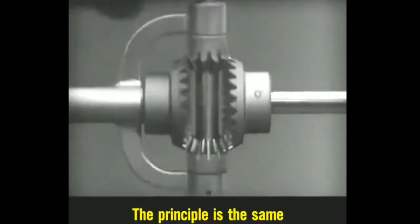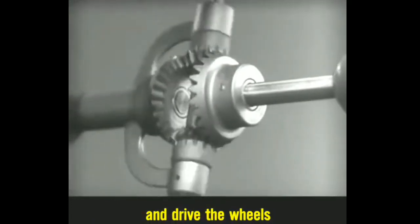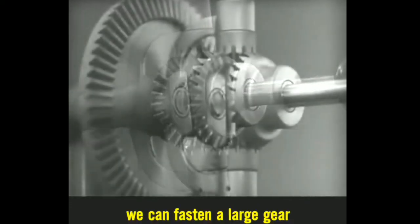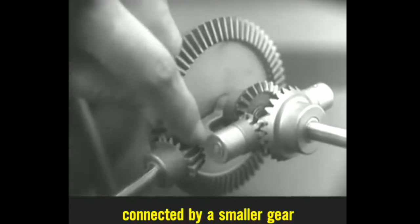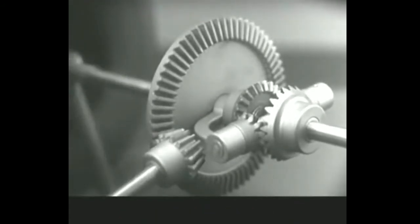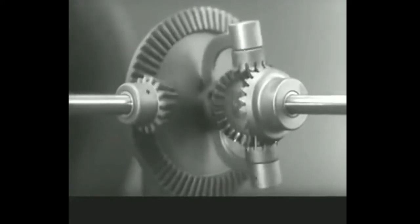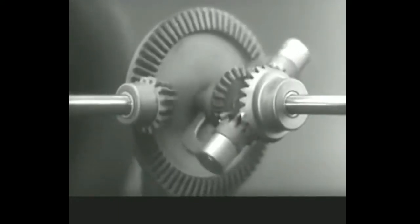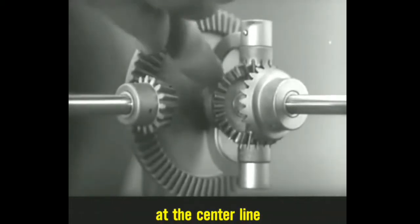The principle is the same. In order to turn the support and drive the wheels, we can fasten a large gear here, connected by a smaller gear to a source of power. Notice that the power is connected to the differential at the center line.